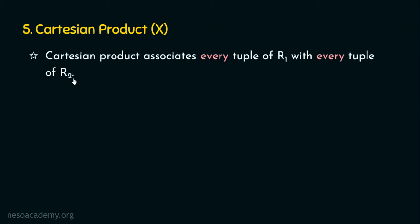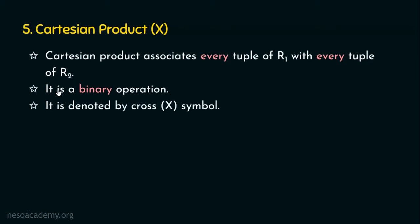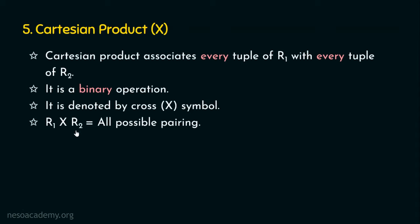Every tuple of R1 is going to be associated with every tuple of R2. This is also a binary operation because Cartesian product works on two relations as input, R1 and R2. The Cartesian product operation is denoted by the cross symbol. So R1 cross R2 gives the result as all possible pairings. For example, if relation one has four tuples and relation two has six tuples, then 4 cross 6 equals 24 records in the output — all possible pairings among all the tuples in the relations involved.